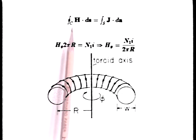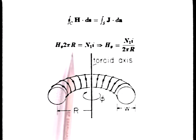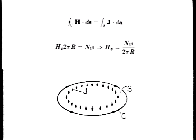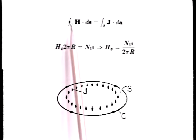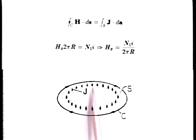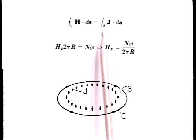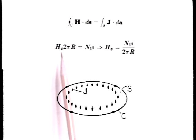Thus, the line integral of H is essentially 2 pi R times H. To evaluate the right-hand side of Ampere's law, we see that the surface S spanned by this contour C is pierced by the current I as many times as there are turns N1. So the surface integral of J is N1I. Thus, Ampere's law reduces to the product of H phi and the contour circumference 2 pi R equaling N1I.